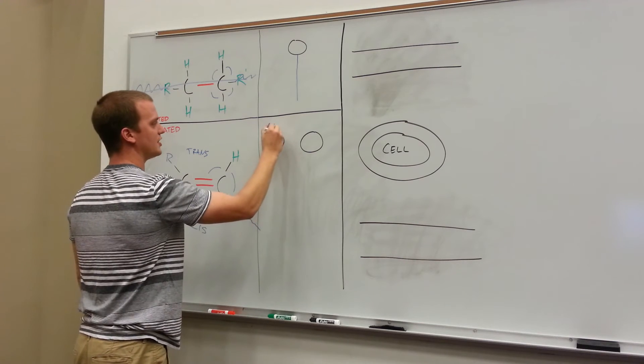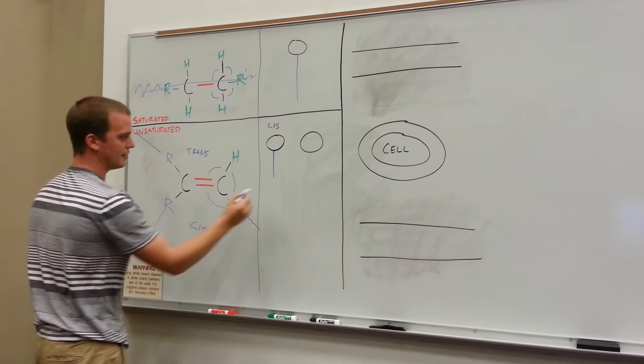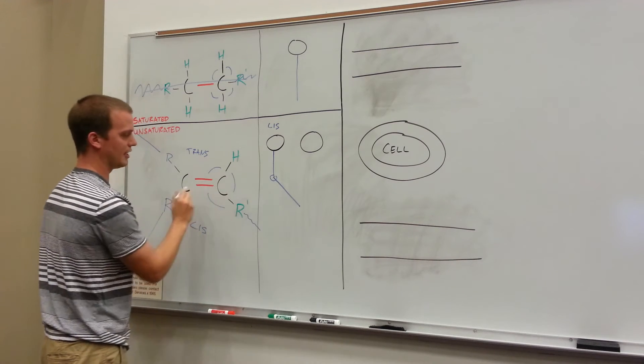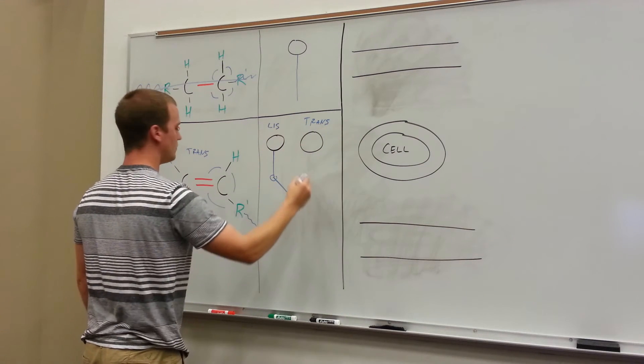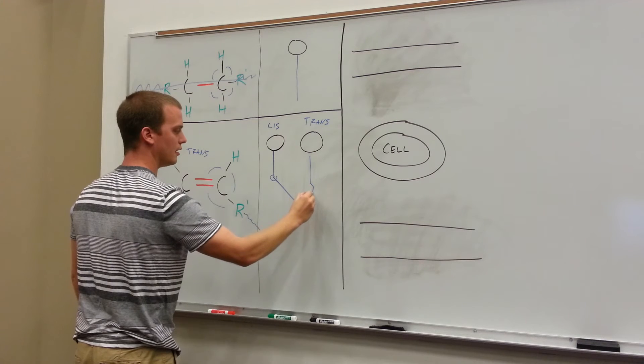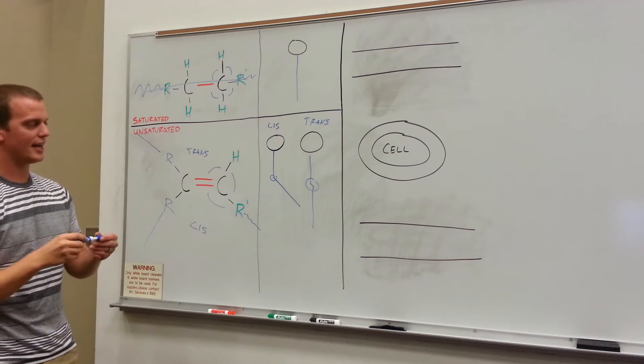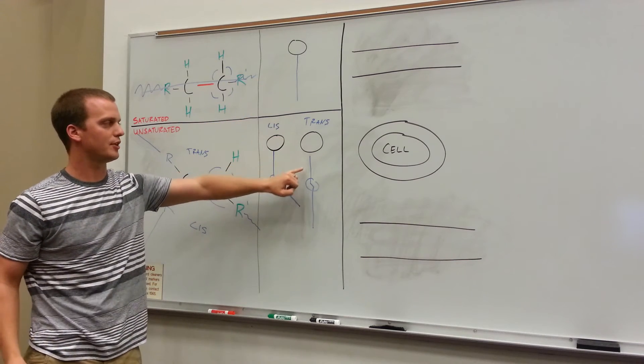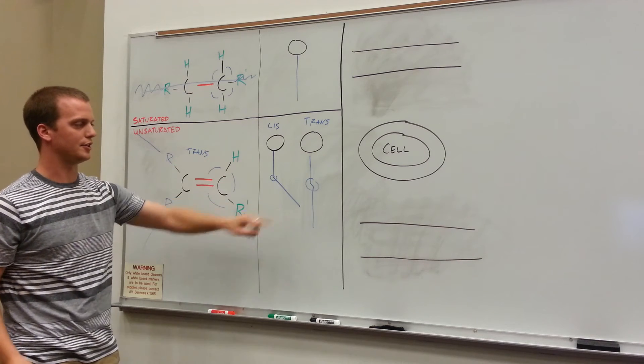Down here, I'll draw a cis first. We're going to have a straight line, and then it's going to bend. So let's say that would be our cis bond, right there would be our cis bond. And for trans, you're going to have pretty much another linear fatty acid, just like our saturated. So right here you have a trans unsaturated fatty acid that's pretty much linear, and a cis unsaturated one which is not very linear.